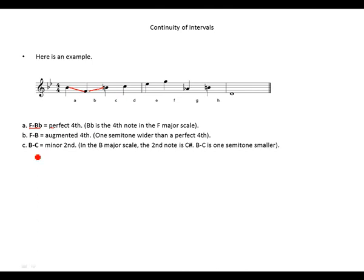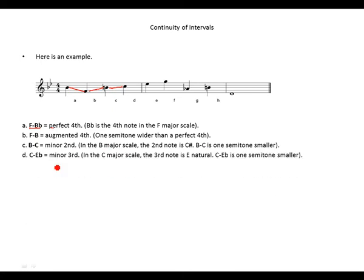From B to C: that's a minor second. In the B major scale the second note is C sharp, so B to C natural is one semitone smaller — that's why it's a minor second. From C to E-flat: in the C major scale the third note is E natural, so E-flat is one semitone smaller, making C to E-flat a minor third.